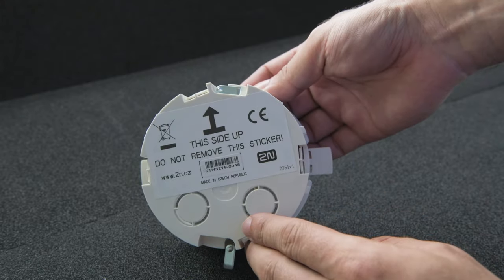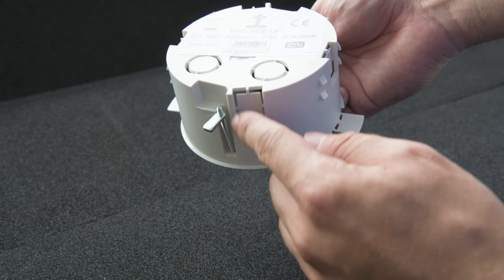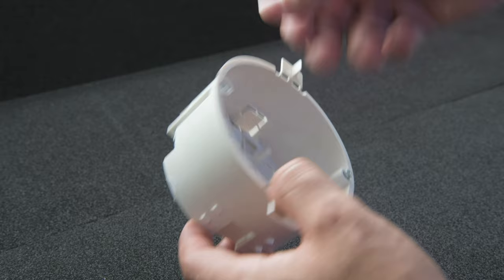It comes with these anchoring brackets which are used for plasterboard installations. You can either leave or remove them for brick wall installations as they're not necessary.